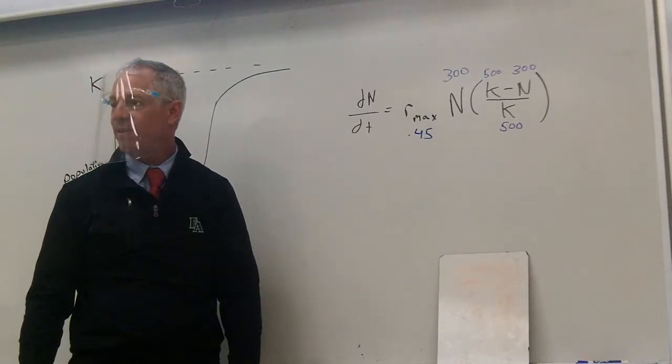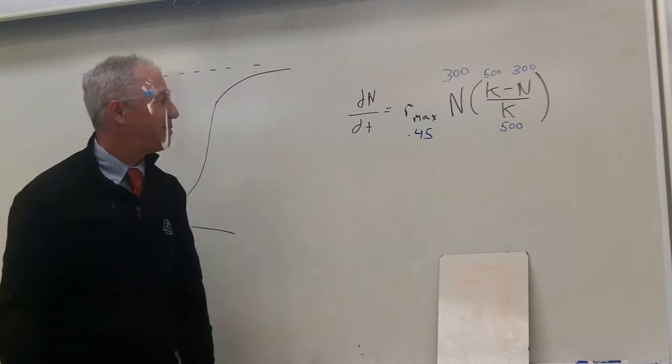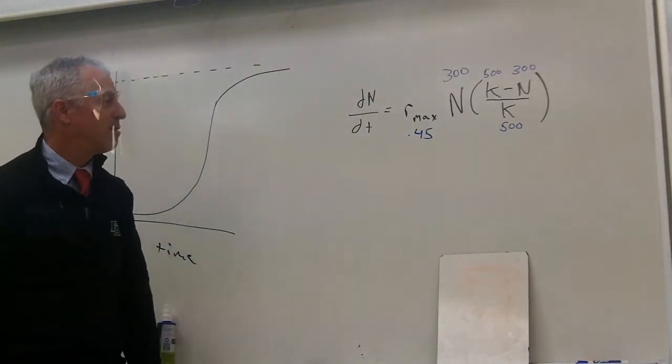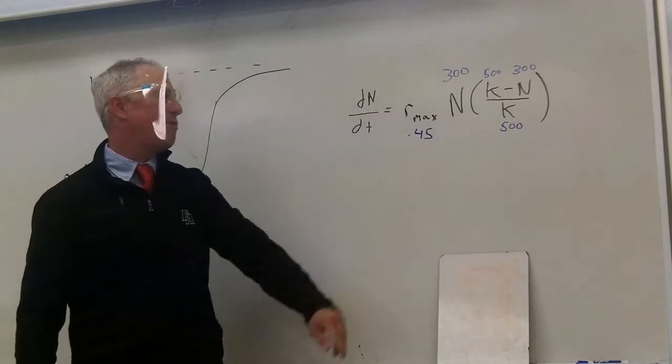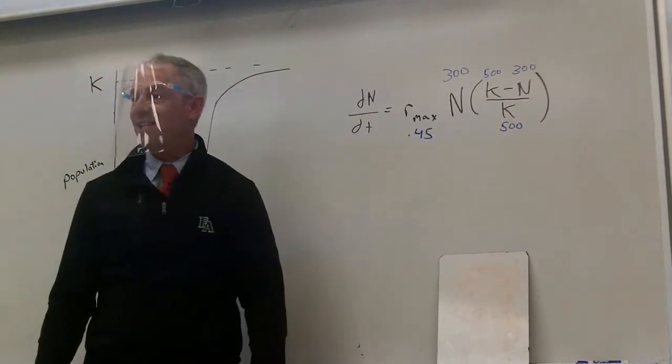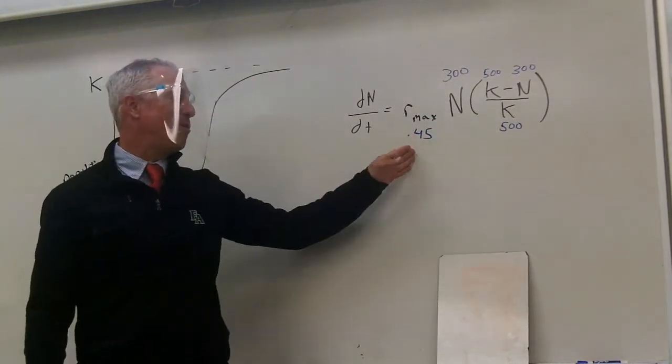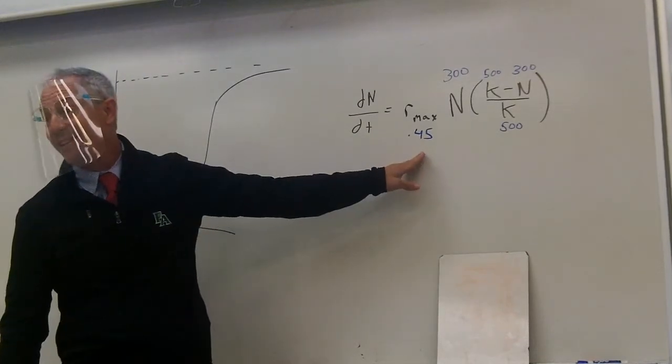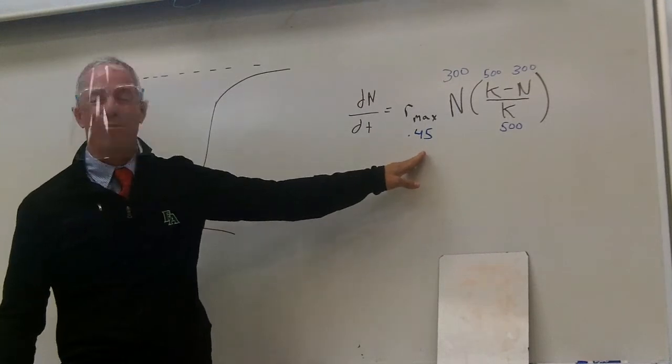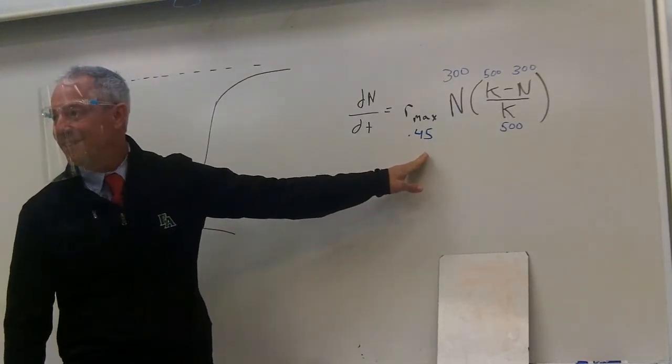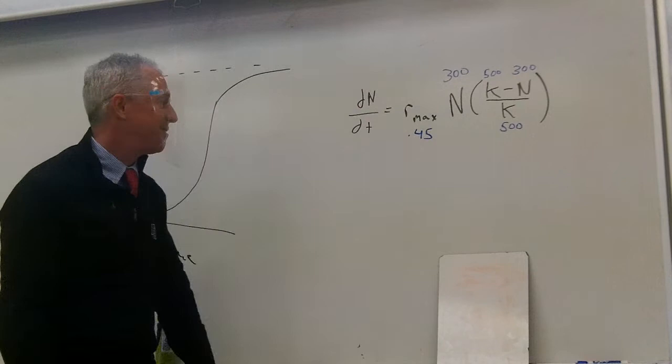You ever seen the movie A Beautiful Mind? Fantastic, Russell Crowe. So I'm down to 120, right? 120 times 0.45. That's a little bit harder for even state championship math team. But I know 0.45 is close to half. So half of 120 is 60. So 120 times 0.45 would probably be like 56, 54. There you go.